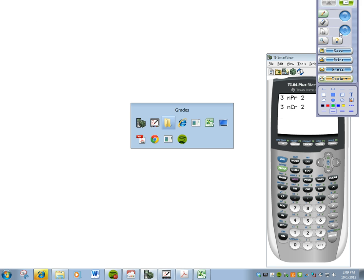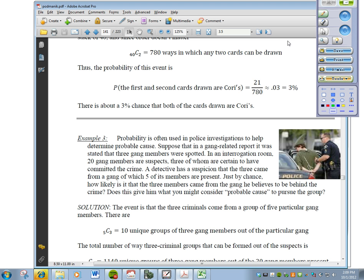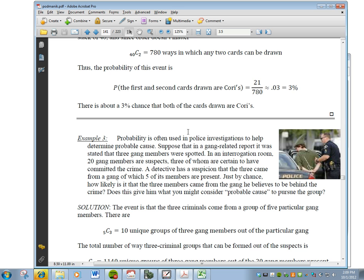Now let's take a look at an example. So probability is often used in police investigations to help determine probable cause. Suppose that in a gang-related report it was stated that 3 gang members were spotted. In an interrogation room, 20 gang members are suspects, 3 of whom are certain to have committed the crime.